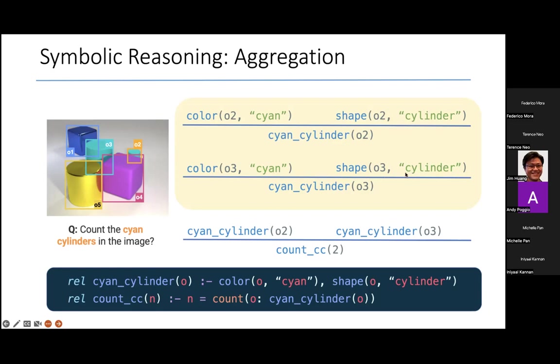And so does O3 over here. It also satisfies both of these criteria. And finally, the count of such objects is two because by applying the second rule here, we have a derivation which explains why we have two cyan cylinders.